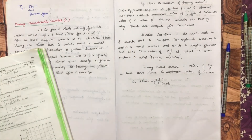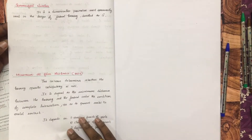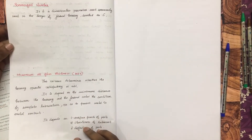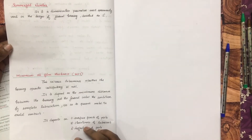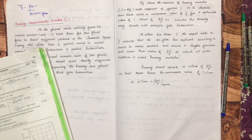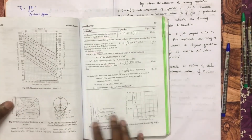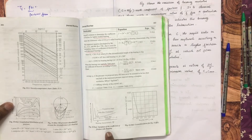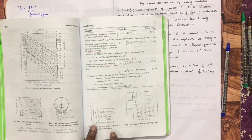What is the Bearing Characteristics Number? The Sommerfeld Number is the minimum oil film thickness. The Bearing Characteristics Number is an important title. The variation of friction with the Bearing Characteristics Number is shown in the figure.